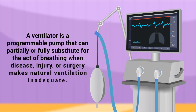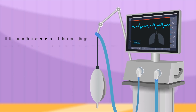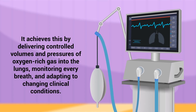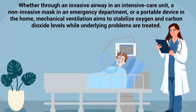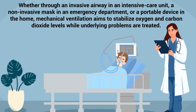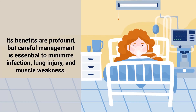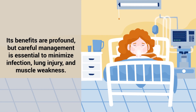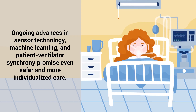A mechanical ventilator is a programmable pump that can partially or fully substitute for the act of breathing when disease, injury, or surgery makes natural ventilation inadequate. It achieves this by delivering controlled volumes and pressures of oxygen-rich gas into the lungs, monitoring every breath, and adapting to changing clinical conditions. Whether through an invasive airway in an intensive care unit, a non-invasive mask in an emergency department, or a portable device in the home, mechanical ventilation aims to stabilize oxygen and carbon dioxide levels while underlying problems are treated. Its benefits are profound, but careful management is essential to minimize infection, lung injury, and muscle weakness. Ongoing advances in sensor technology, machine learning, and patient-ventilator synchrony promise even safer and more individualized care.